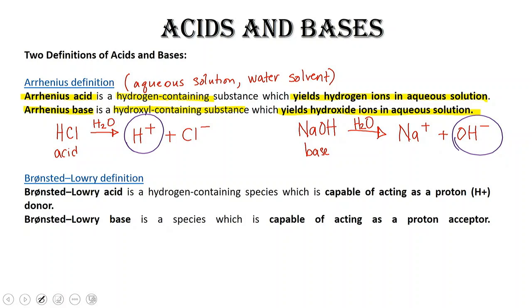Bronsted-Lowry definition helps us to describe why ammonia is actually a base. So Arrhenius definition limits us to using water as a solvent, water solutions. And it doesn't help explain why some compounds with amine or NH groups are considered as bases. Let's take a look at the Bronsted-Lowry definition.